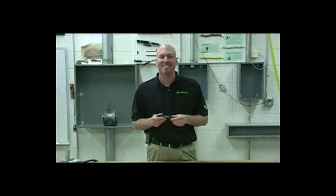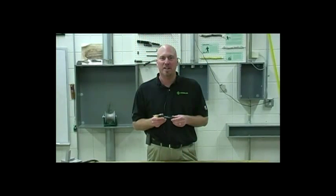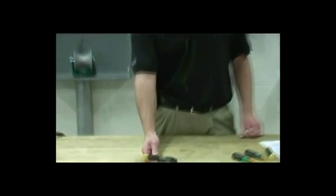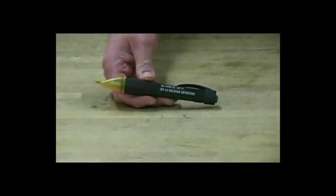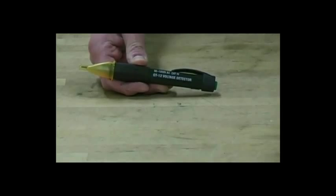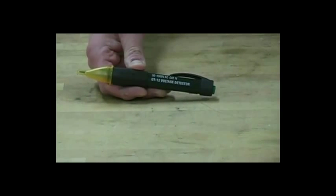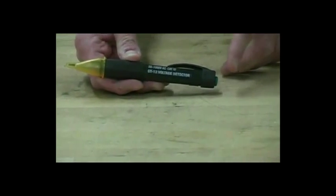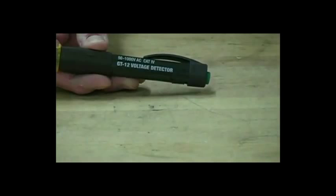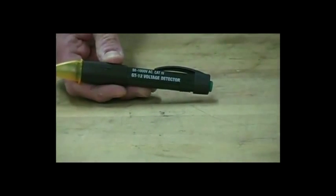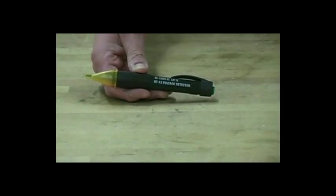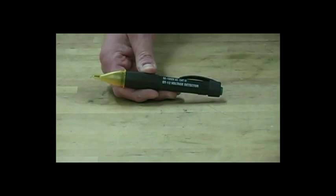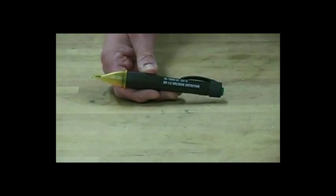The GT12 is a Category 4 1000 volt rated non-contact voltage detection tester. It is intended to check for the presence of AC voltage, signaling the user with an intermittent tone and flashing LED. The tone can be disabled using the smart on-off button. The GT12 has a self-test feature that continuously tests the integrity of the entire unit, including the antenna. The GT12 also features low battery indication and an auto power-off feature.